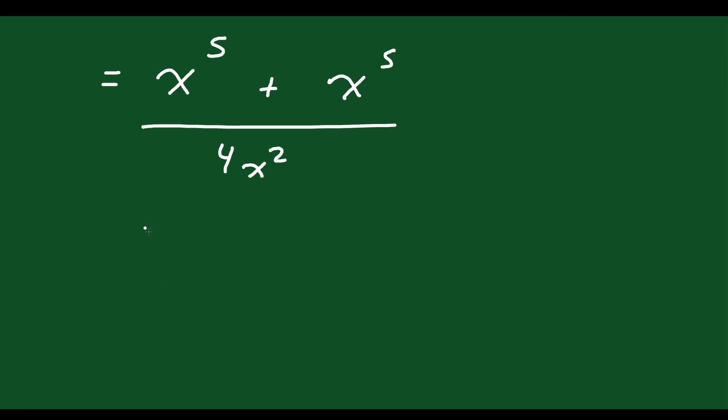Now what can I do with this? Well, on the top we have what we call like terms. Like terms are when you have multiple terms that have the same variable with the same exponent. If I have 1x⁵ here and 1x⁵ here and I add those together, I'm going to get 2x⁵. That's just adding like terms together.